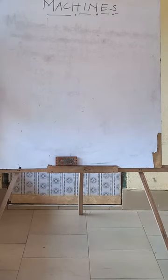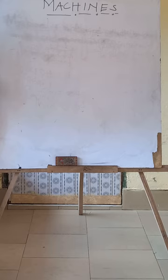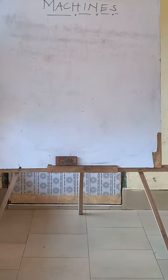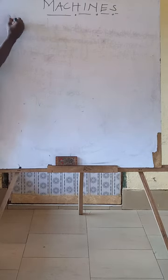Hello guys, welcome to Easy Learning. Our topic for today's session is machines. So when we say a machine, how do you understand the word machine? A machine is any device which helps in making work easier and faster to do. Any device that helps work to be easy and done faster is what a machine is, so let's look at the definition.